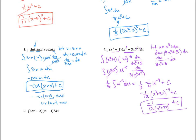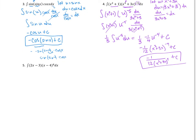Finally, for the last problem, I'll guess u equals x minus 4 since it's raised to the eighth power — the more complex one. So du equals dx. Making the substitution gives the integral of 2x minus 3 times u to the 8th du — but there's still a 2x minus 3 left over. If I tried letting u equal 2x minus 3 instead, I'd have the same dilemma. So there's a trick for these.